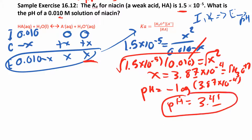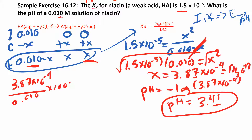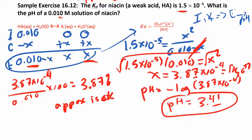If you go ahead and do the check — to make sure the approximation is okay — you do X over initial times 100. Our X was 3.87×10⁻⁴ and our initial was 0.010, so that gives you 3.87%, which is less than 5%. So the approximation is okay. That was our last weak acid problem.